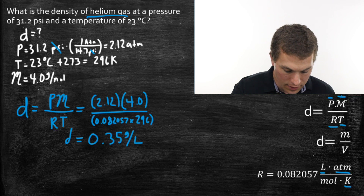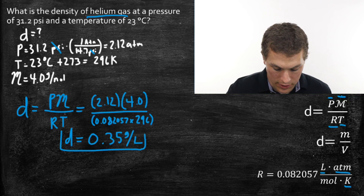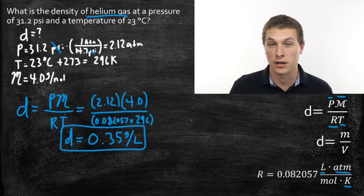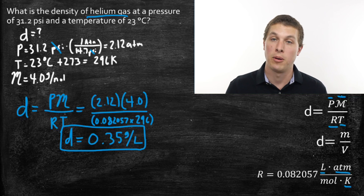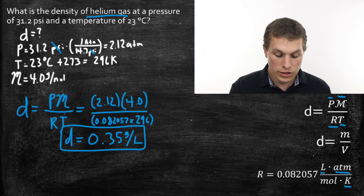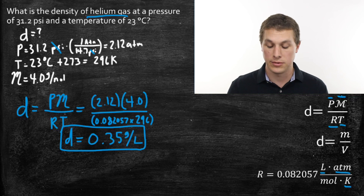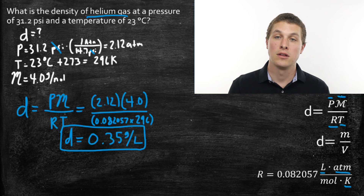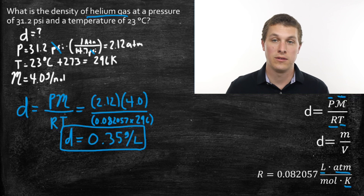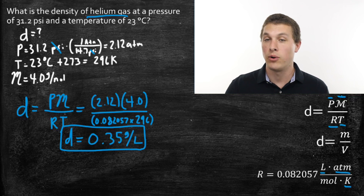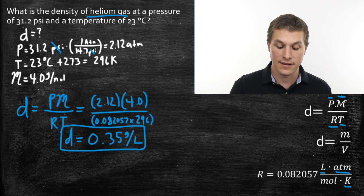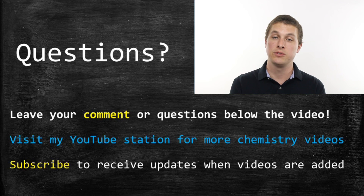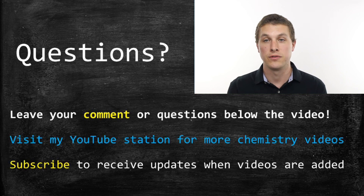So the density of helium gas at this pressure and temperature is 0.35 grams per liter — meaning in every liter of gas you have about 0.35 grams of helium. These are two of the common problem types you'll see with this density form of the ideal gas law, which lets us identify gases and calculate their densities. Thanks for watching this episode of Real Chemistry — if you have any questions please leave them below, and please subscribe for future videos.